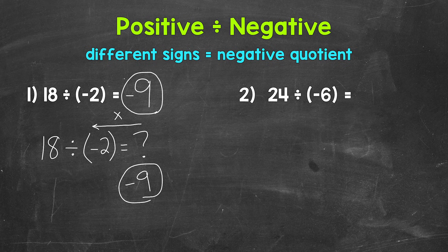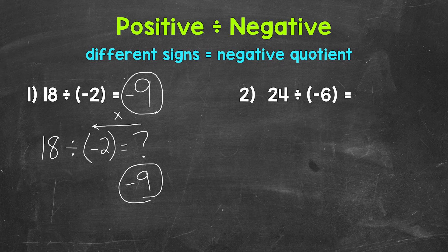Negative 9 times negative 2 equals a positive 18. We need a negative times a negative to equal that positive 18. So again, just like multiplication, different signs equal a negative answer.